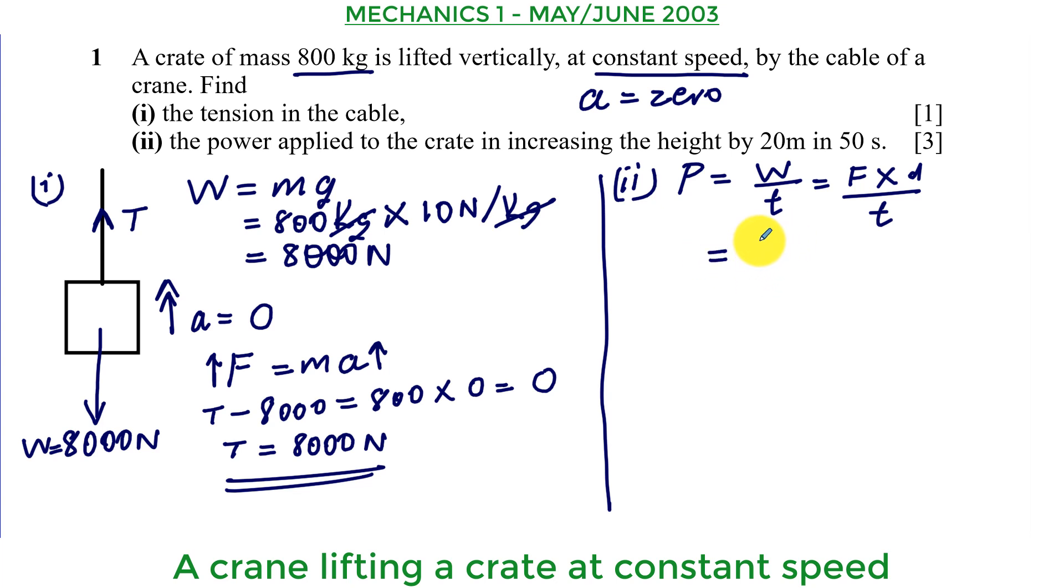The force is 8000. The distance moved is 20 meters. And to move that distance, it took 50 seconds. And this is going to give us 5 here. 5 here we are going to get 1600. 1600 times 2. We are going to get 3200 watts. Or 3.2 kilowatts.